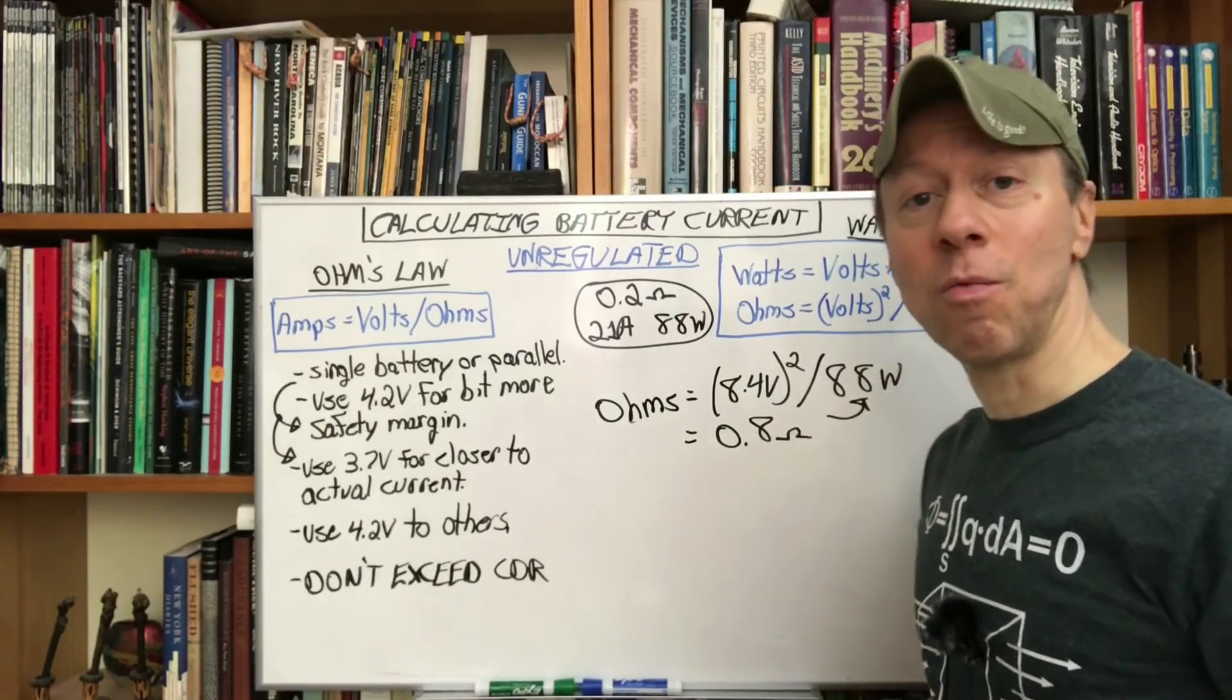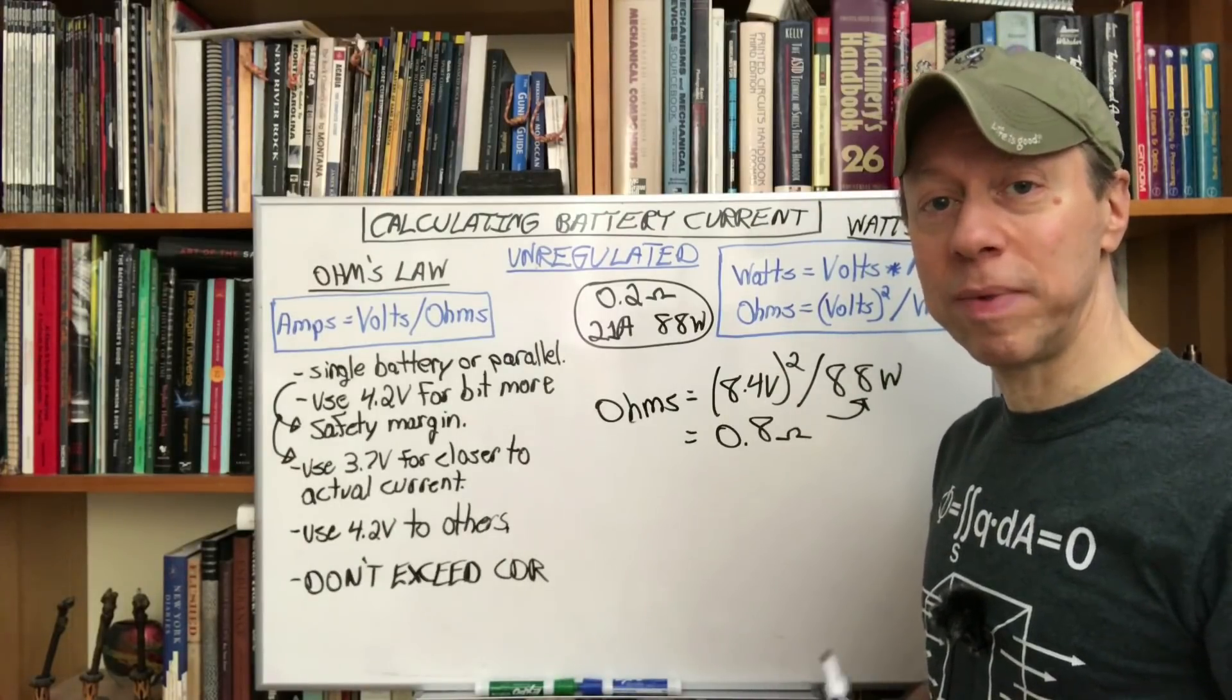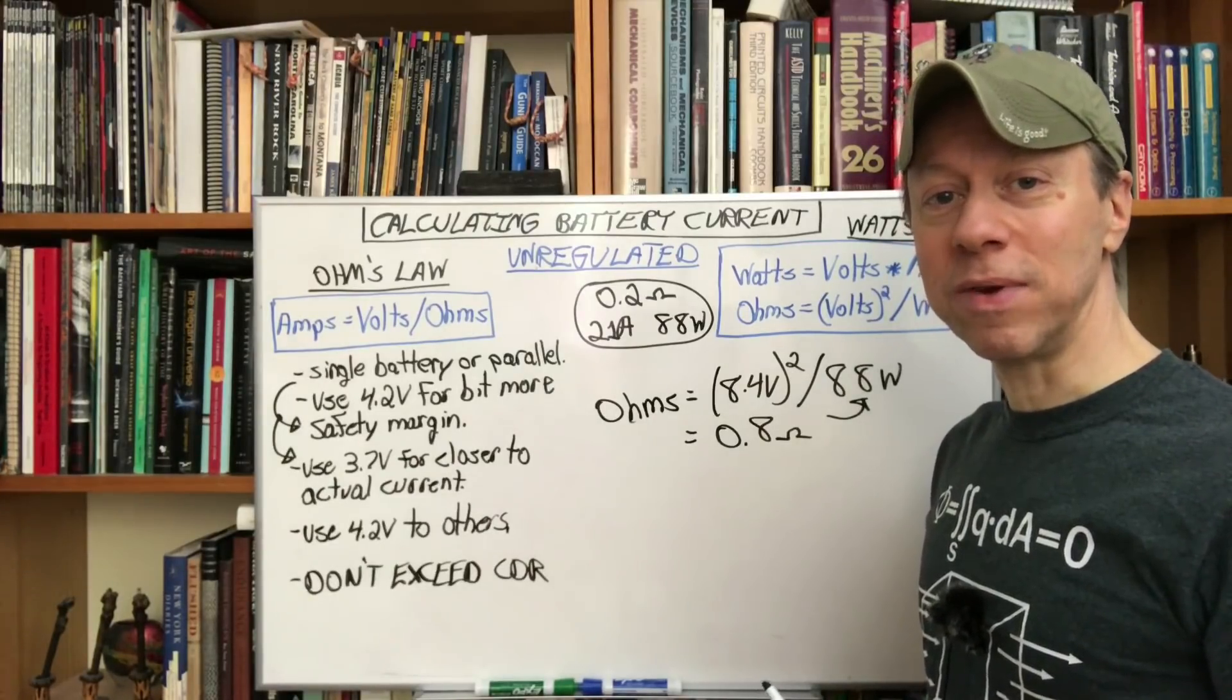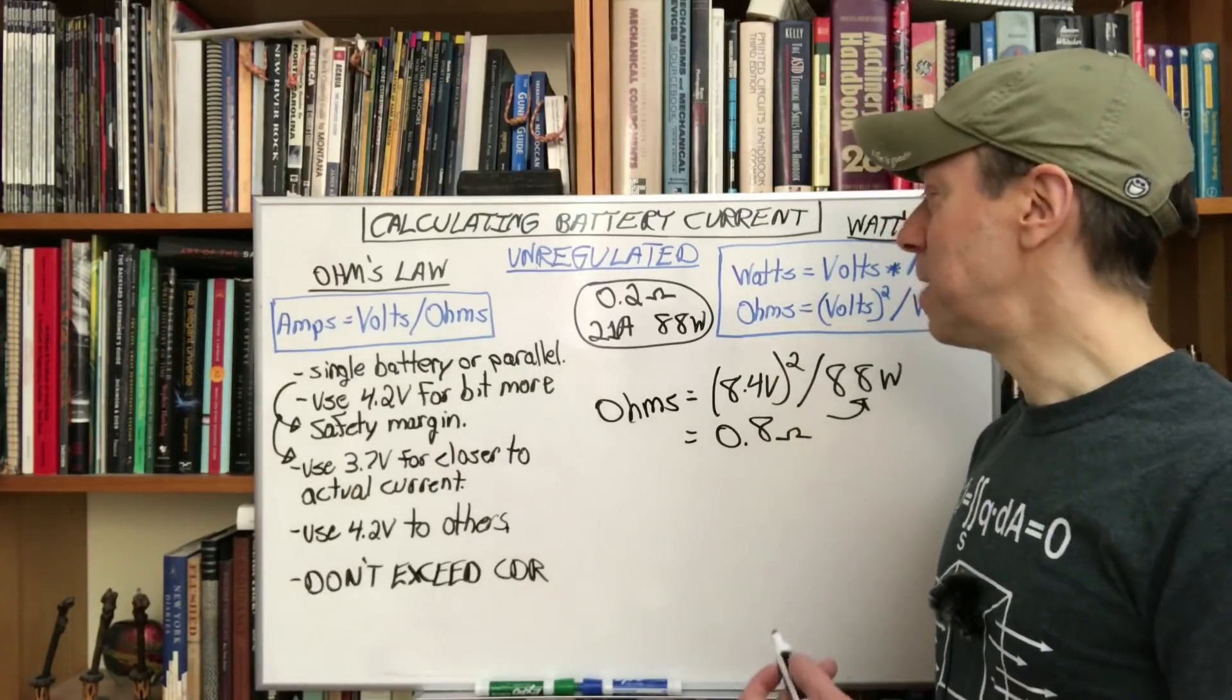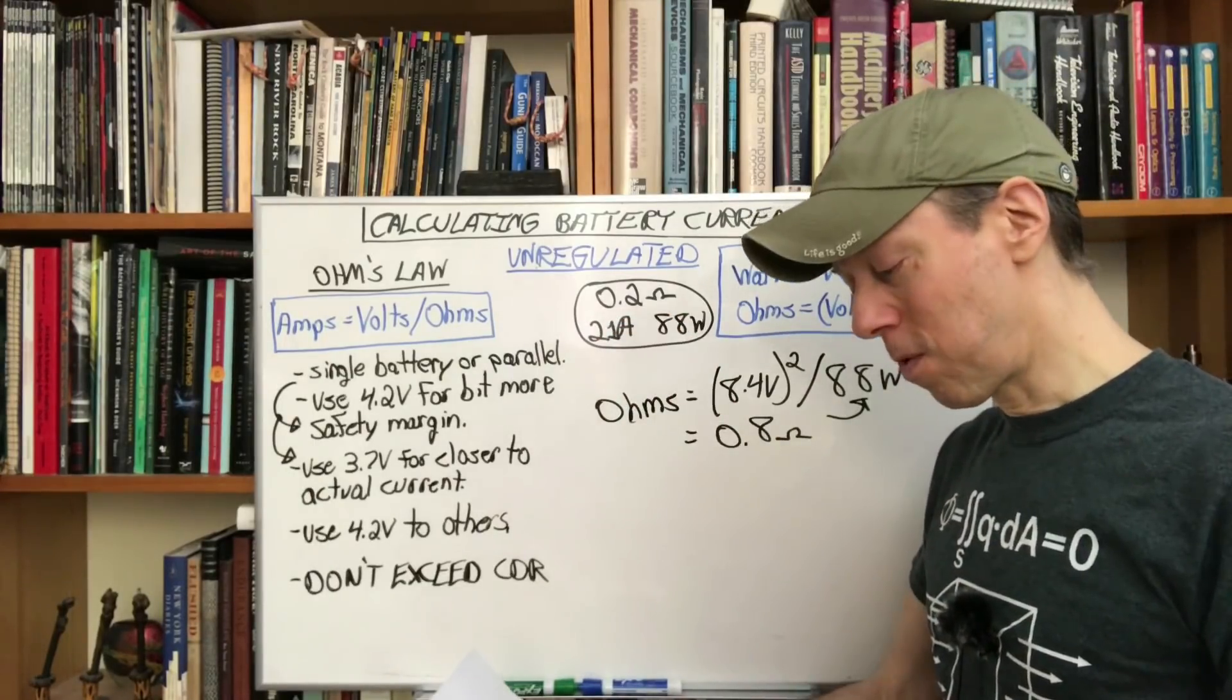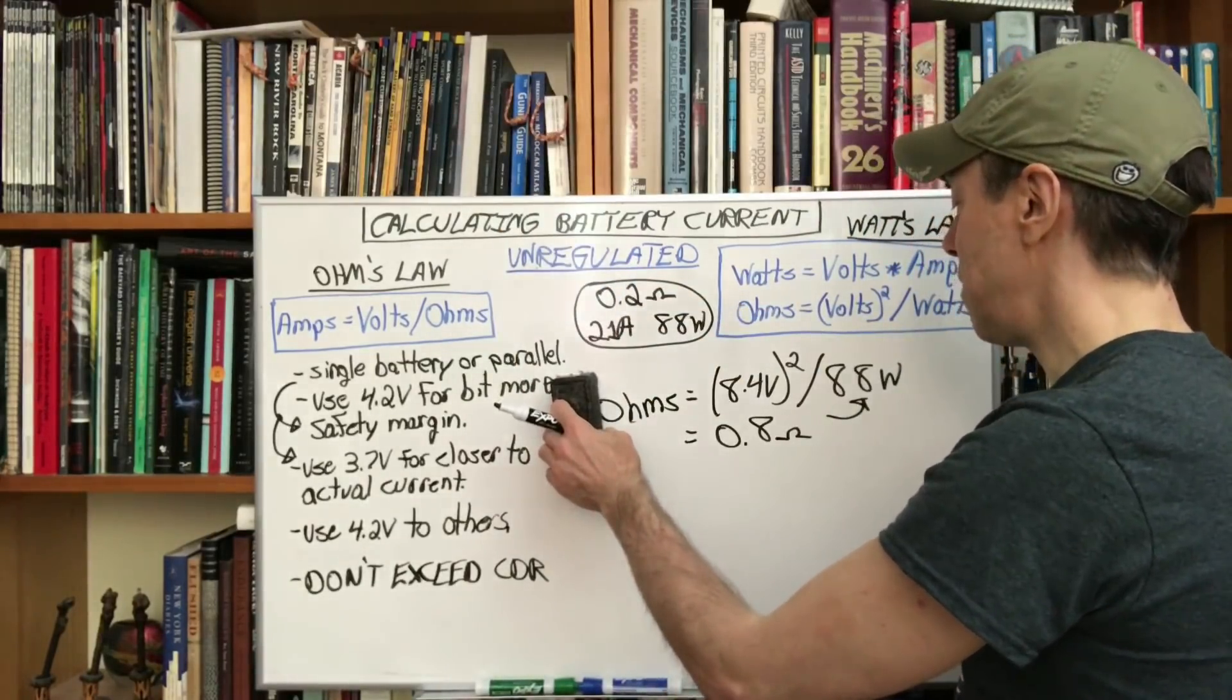You don't just double the resistance you multiply it by four to get the same power level. This 0.8 ohms will give us 88 watts. That hopefully gives us the same vape experience depending on the coil, the wire we use. Now it could be a lot harder to fit that much wire into an atomizer but that's a different issue and one of the things you deal with when you go to a series mod.